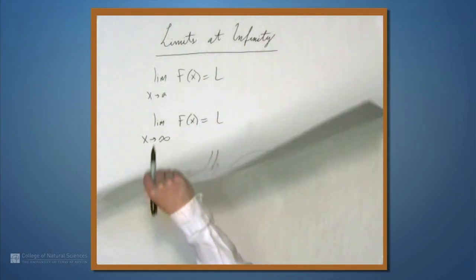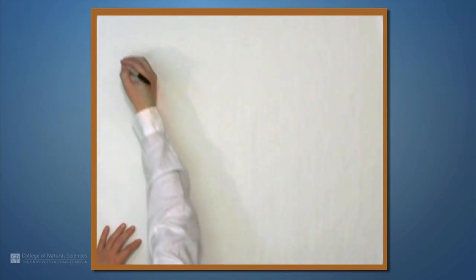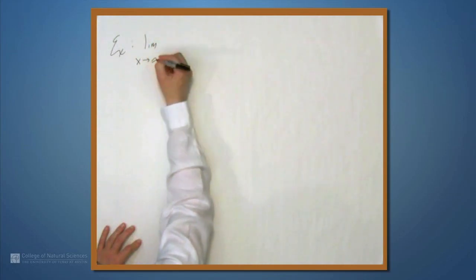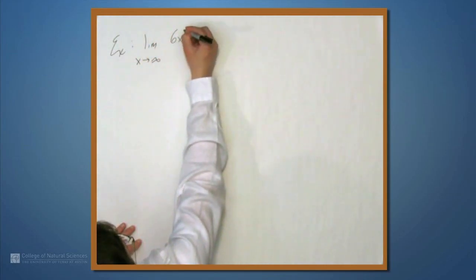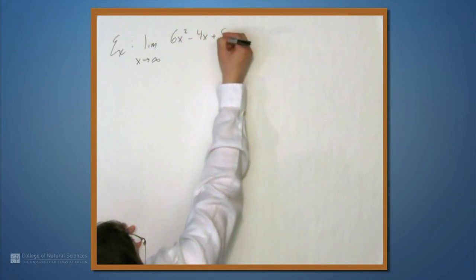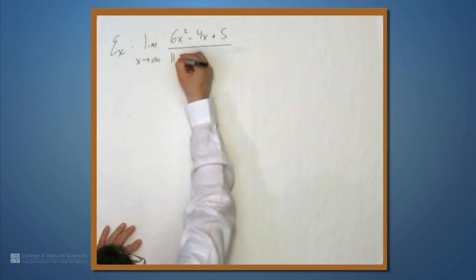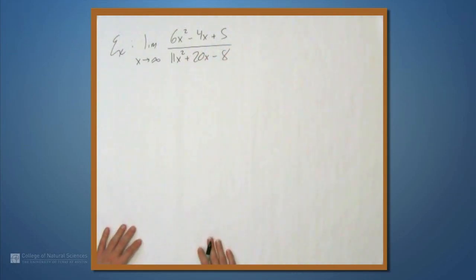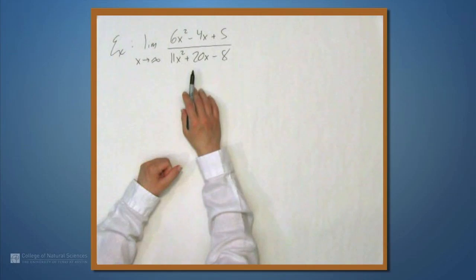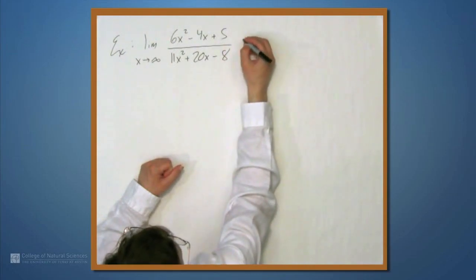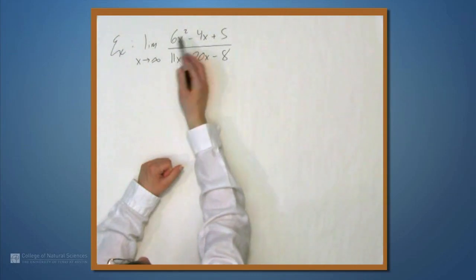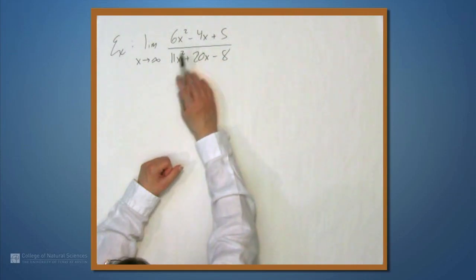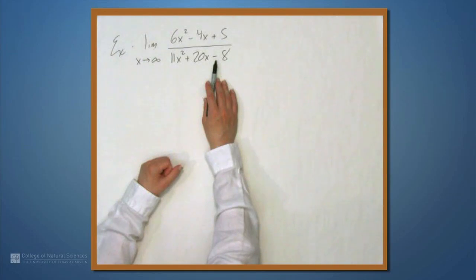Let's look at an example. Let's find the limit as x approaches infinity of a rational function, and we can talk about whether or not there are horizontal asymptotes. To compute this limit, we're going to have to rewrite it, because we have something in the numerator going to infinity — this is a quadratic, it's going to infinity as x goes to infinity. Likewise, the denominator is going to infinity.